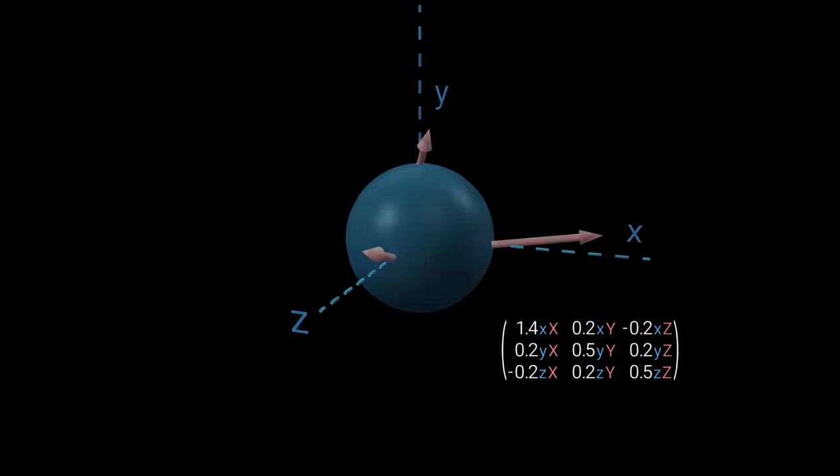Now let's draw the same forces on a sphere. We can compute forces in other directions using the rule we just saw, as a weighted sum of these three.